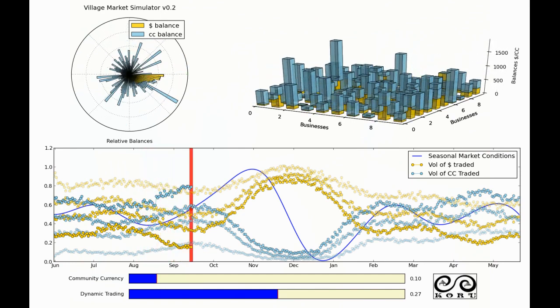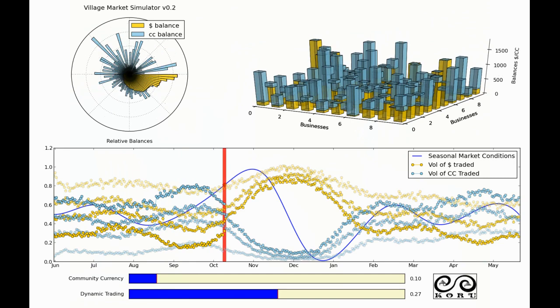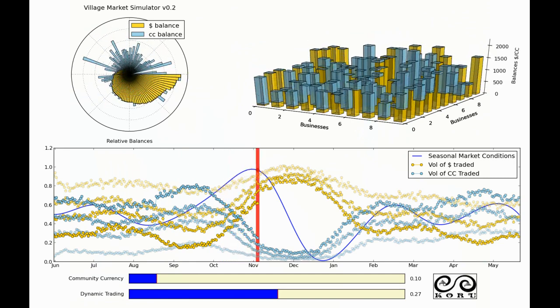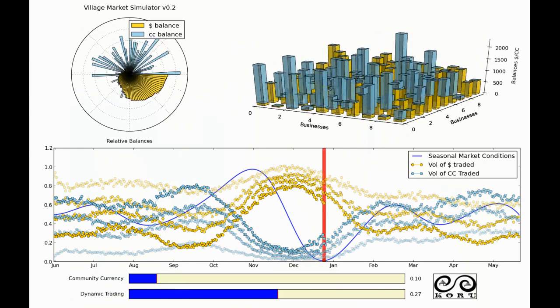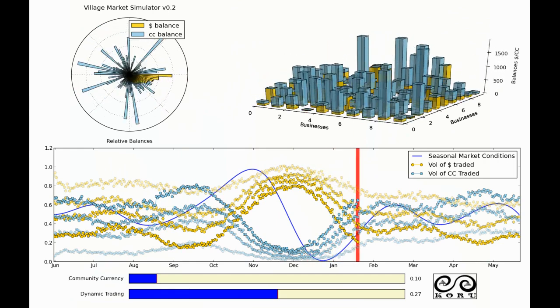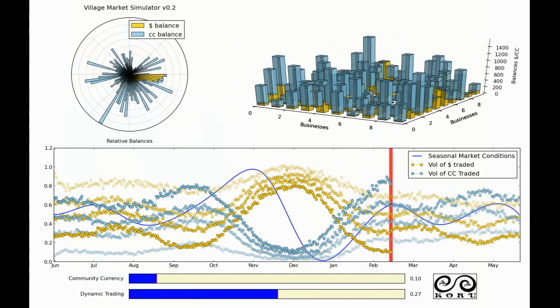And this is why Switzerland, one of the reasons why Switzerland is one of the best economies in the world. Switzerland also has a local currency called the Weir that has this sort of counter-cyclic effect as well.